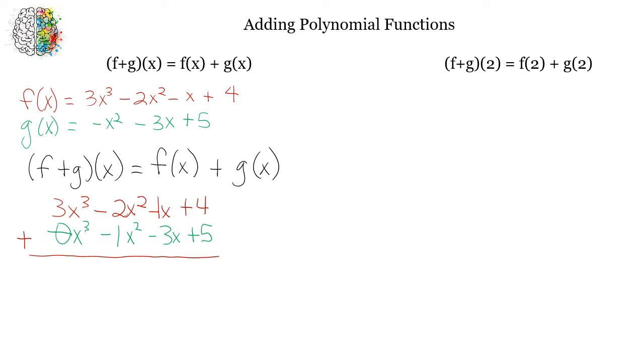So that's going to be 4 plus 5 is 9. Minus 1 plus minus 3 is a minus 4. Minus 2 plus a minus 1 is a minus 3. And 3 plus 0 is 3. So this would be my final answer for f plus g of x.